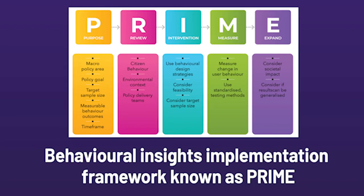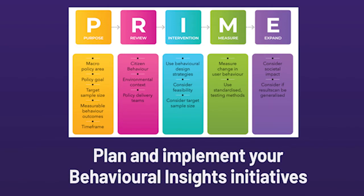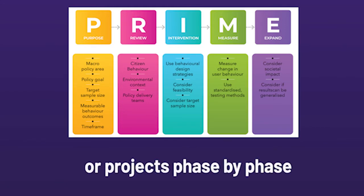PRIME is an abbreviation of P — Purpose, R — Review, I — Intervention, M — Measure, and E — Expand. You can use the PRIME implementation framework to plan and implement your behavioural insights initiatives or projects phase-by-phase. We will go over each stage in the coming lessons.